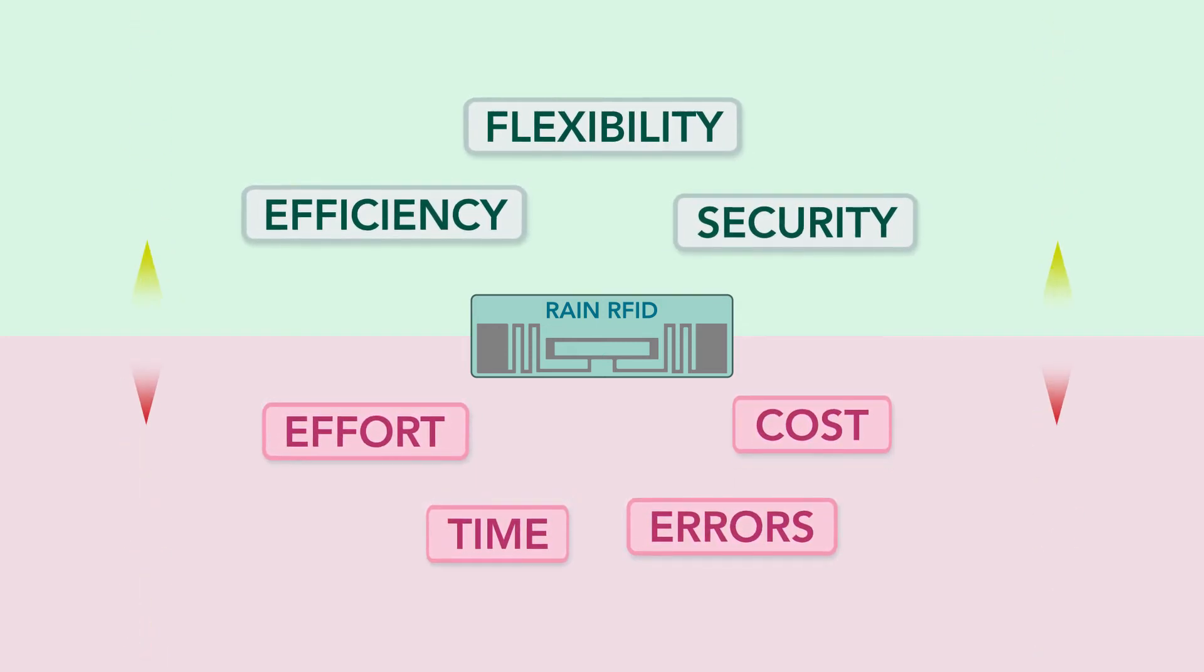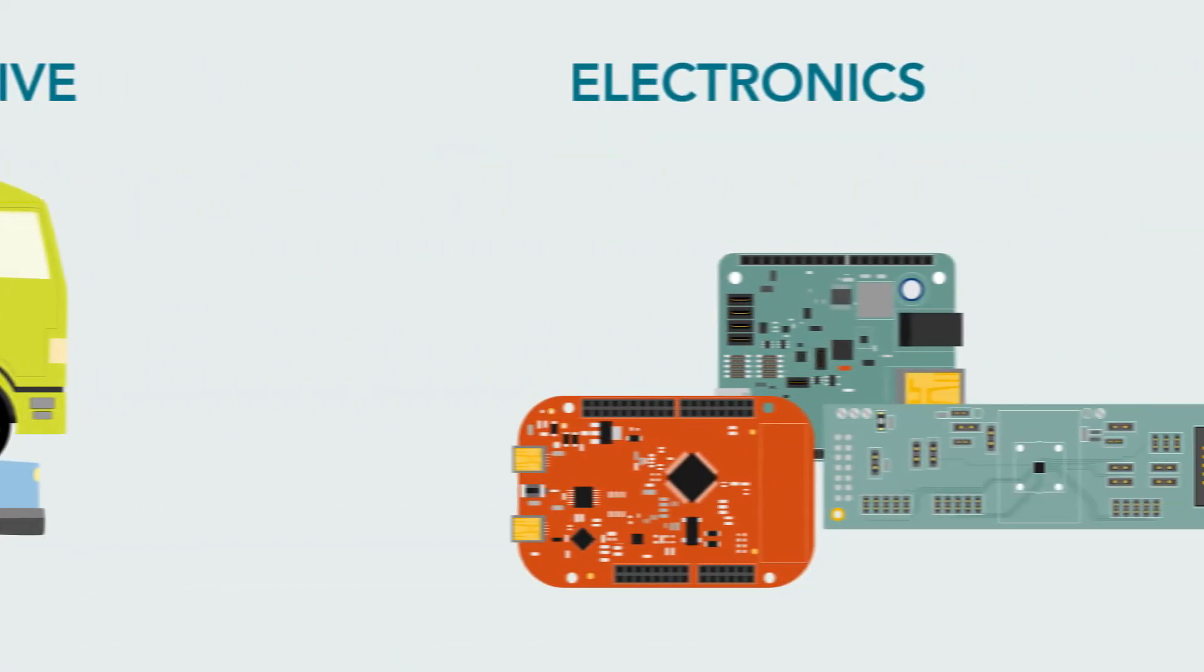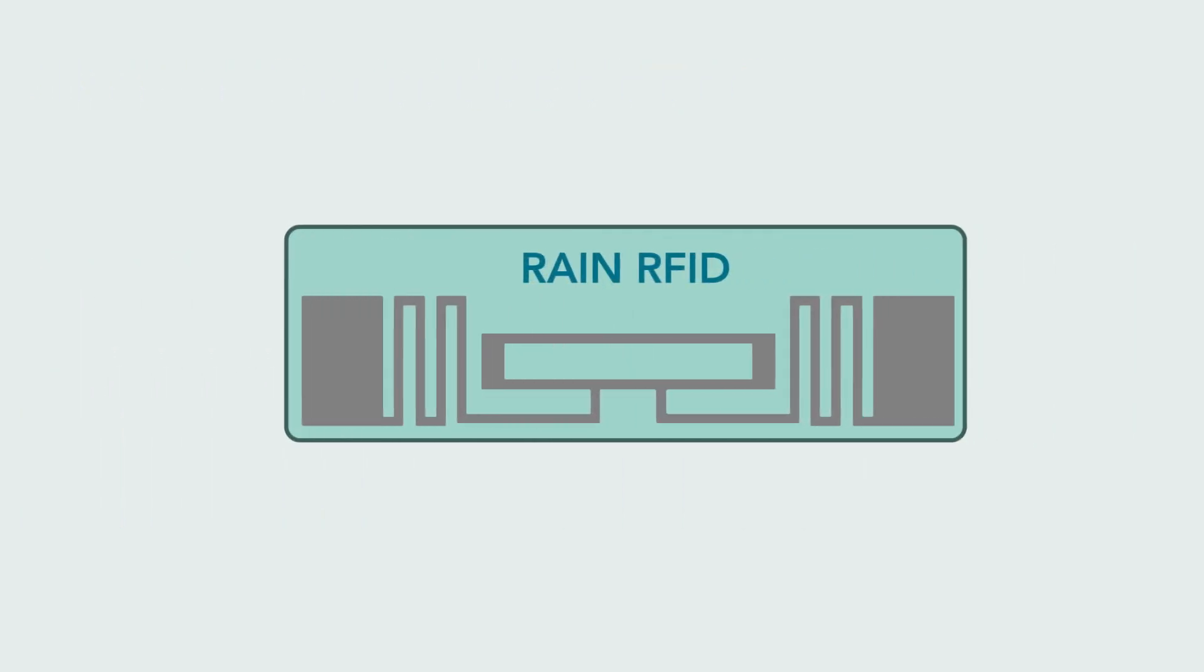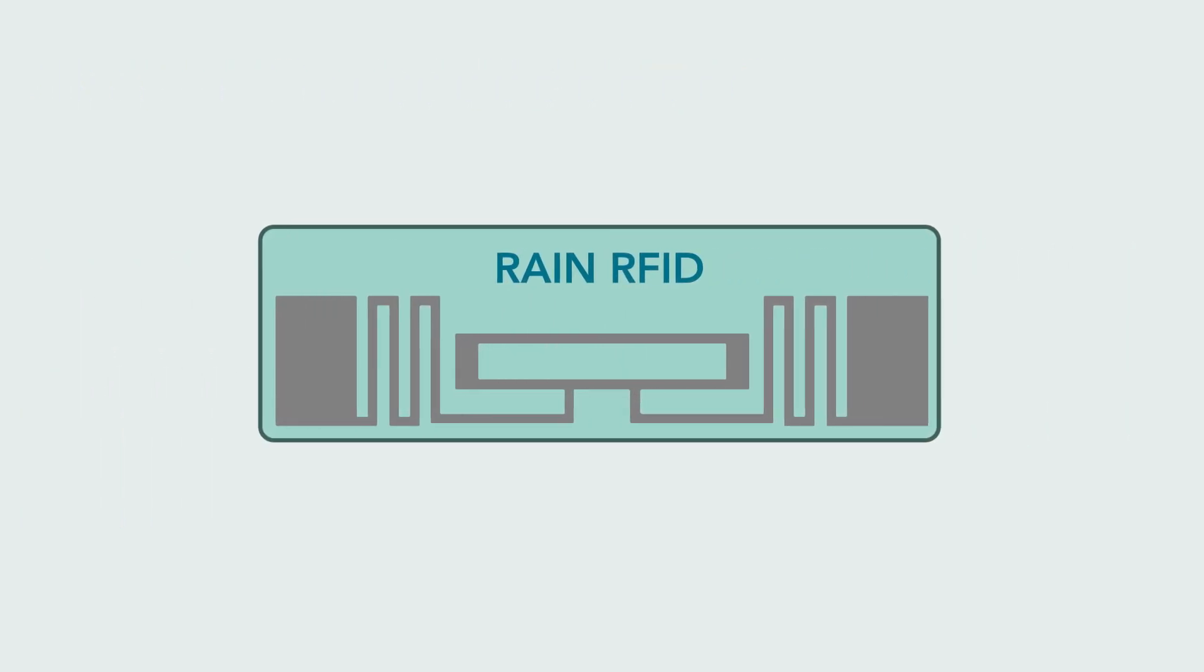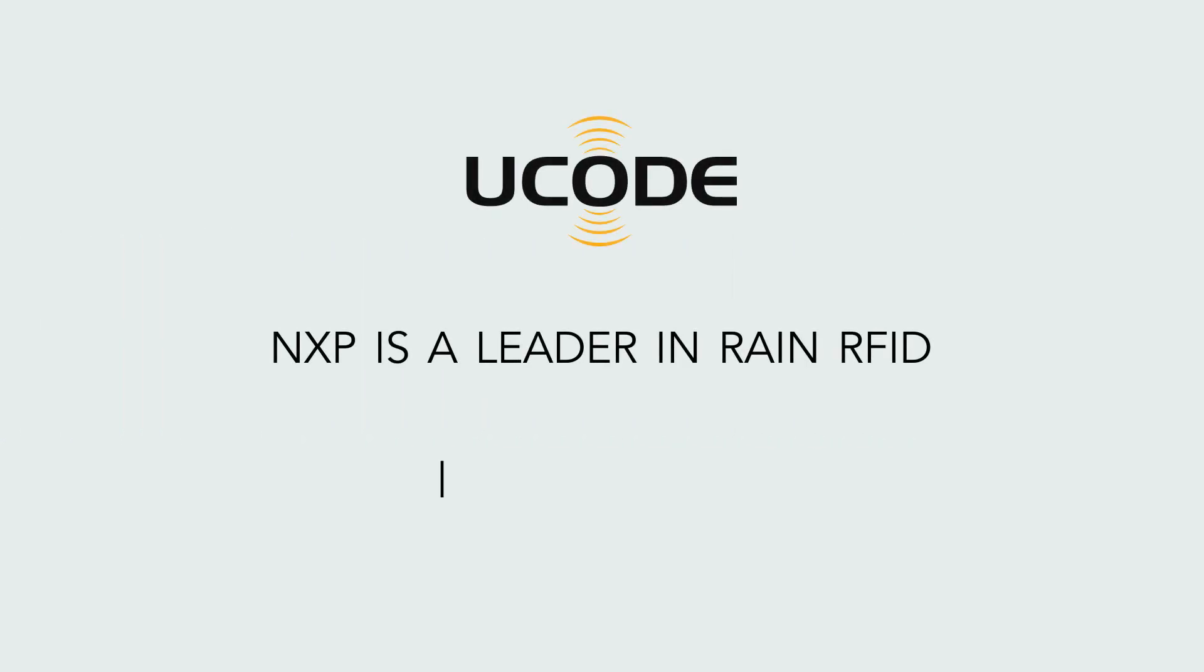Companies and industries like automotive production and electronics manufacturing are already experiencing the benefits of adopting RAIN RFID. For detailed information, go to www.nxp.com/rfid.